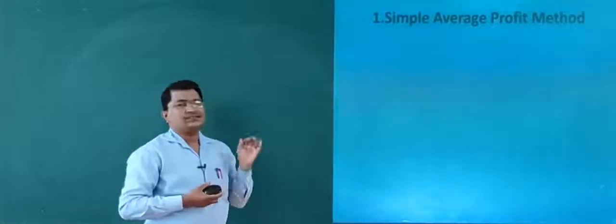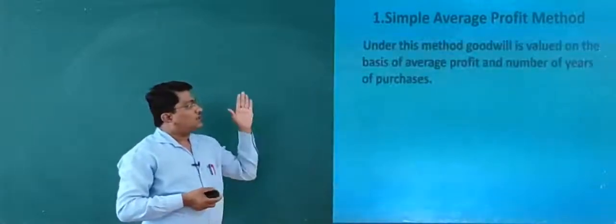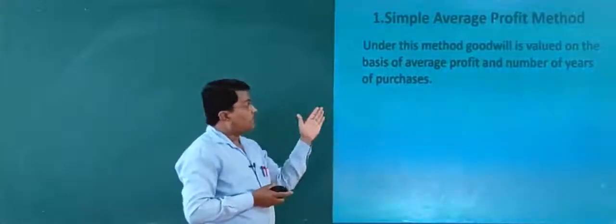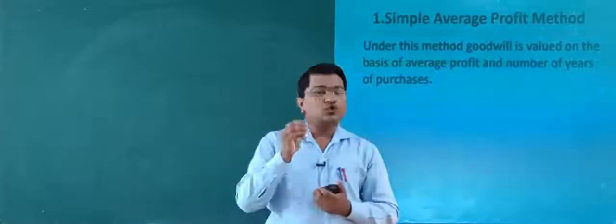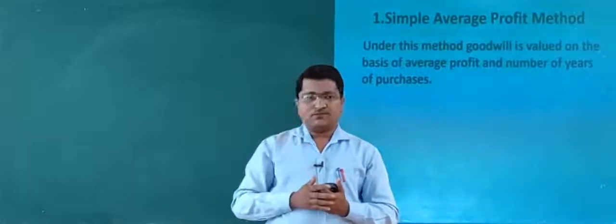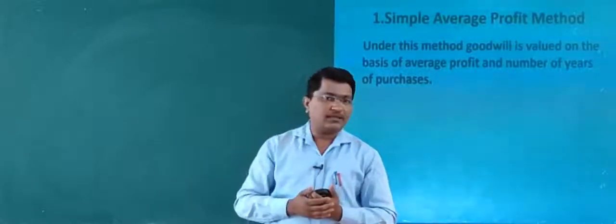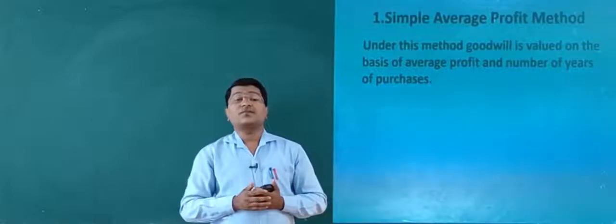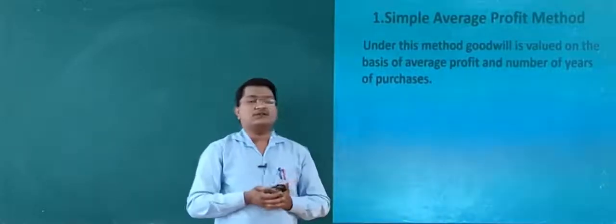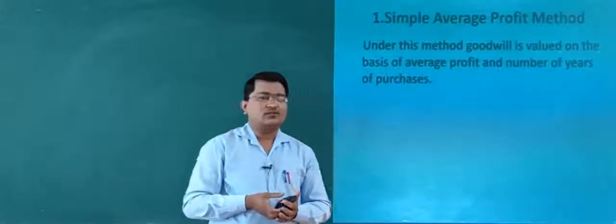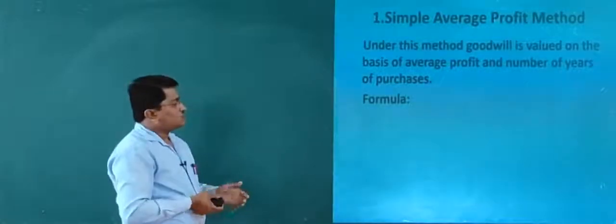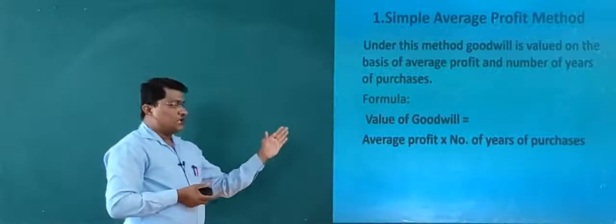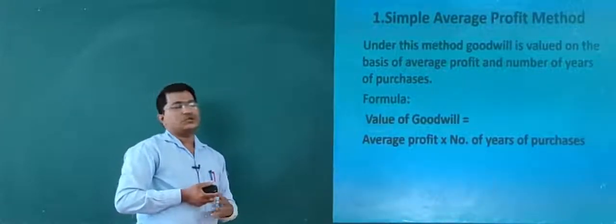Let's go for the simple average profit method. Under this method, goodwill is valued on the basis of average profit and number of years of purchases. So the value of goodwill is equal to average profit multiplied by the number of years of purchases.